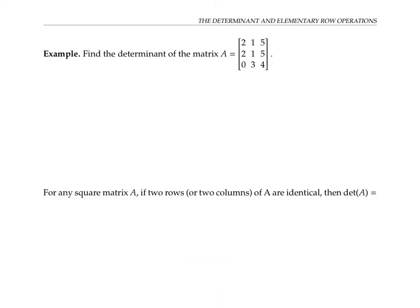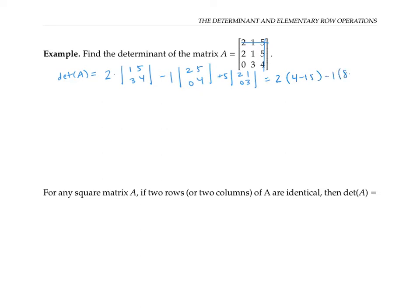Before we get to elementary row operations, I want to do one warm-up example. Please pause the video and see if you can figure out the determinant of this matrix A. I'm going to calculate the determinant by expanding along the first row. So I get two times the determinant of [1,5;3,4] minus one times the determinant of [2,5;0,4] plus five times the determinant of [2,1;0,3]. That works out to two times (4−15) minus one times (8−0) plus five times (6−0). Adding that all up, I get −22 − 8 + 30, which equals zero.